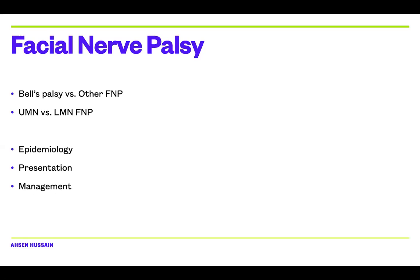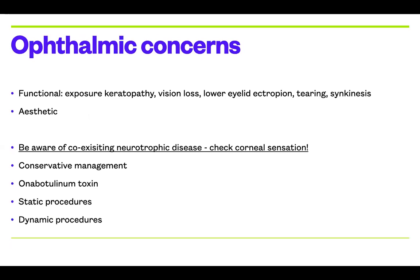In terms of ophthalmic signs: we worry about exposure keratopathy, vision loss, lower eyelid ectropion, and the patient may complain of tearing. If they've had the condition for a while, they may have developed aberrant regeneration and synkinesis. On examination, they may have loss of forehead wrinkling, brow ptosis, inability to close the eyes completely, drooping or drooling at the mouth, and jaw pain. Always ask about taste, tearing, and hearing — if a patient presents with ringing in the ears, that can guide you as to the location of the insult on the nerve and may also relate to involvement of the lacrimal branch, affecting the prognosis for keratopathy.